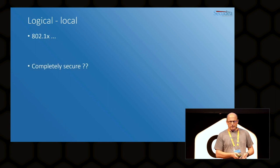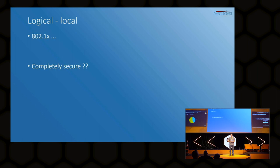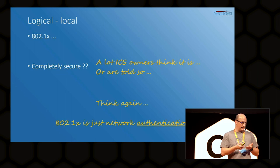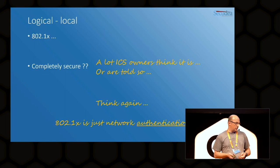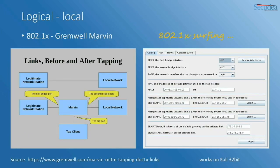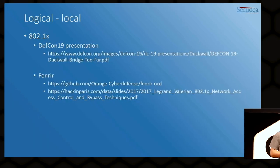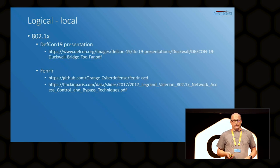Who thinks 802.1x is completely secure? Nobody — what a surprise. A lot of ICS owners are told that it is secure. 802.1x is just a form of network authentication — if you can bypass it, you get access to the network. There's a tool called Gremlin Marvin. Just acting as a bridge, you use the USB-to-Ethernet converter on a single device, run Gremlin Marvin in a virtual machine, and use your host machine to access the network. There's also research on this from DefCon 19 and the Fenrir tool.